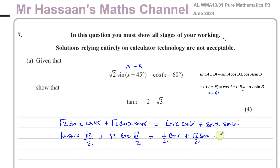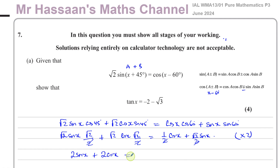Now if I multiply both sides by 2, all the halves cancel out. On the left, root 2 times root 2 is 2, so I have 2 sine x, and root 2 times root 2 is 2 again, so I have 2 cosine x. That equals cosine x plus root 3 times sine x.